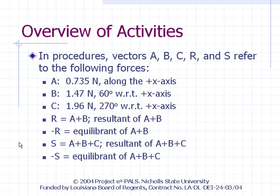Vector A is 0.735 newtons along the positive x-axis. Vector B is 1.47 newtons oriented 60 degrees with respect to the positive x-axis. Vector C is 1.96 newtons oriented 270 degrees with respect to the positive x-axis. Vector R is the resultant of vectors A and B, and negative R refers to the equilibrant of vector R. Vector S is the resultant of vectors A, B, and C, and negative S refers to the equilibrant of vector S.